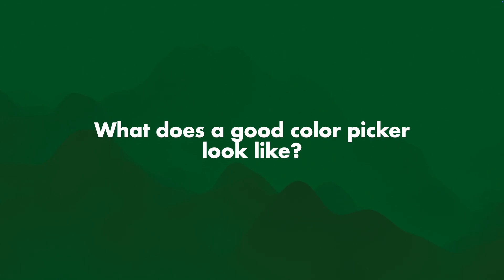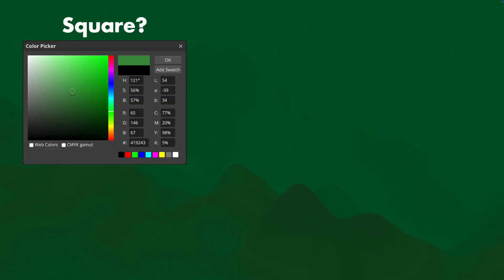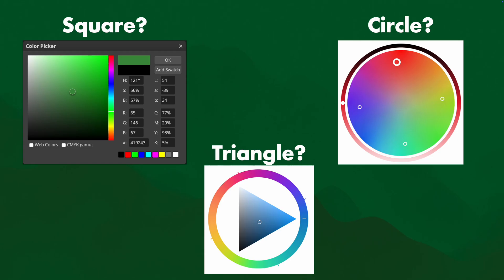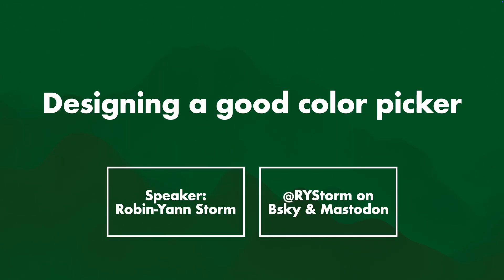What does a good color picker look like? Is it square? Is it a circle? Is it a triangle? Hi, I'm Roman Jansdor, and this is Designing a Good Color Picker.